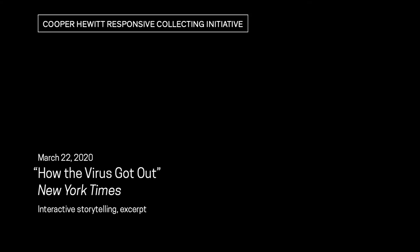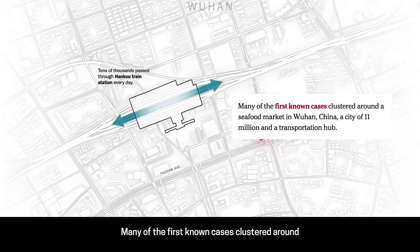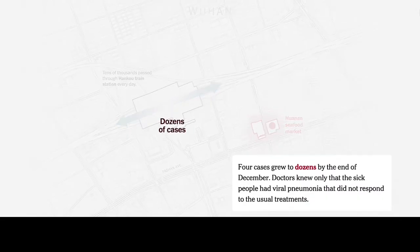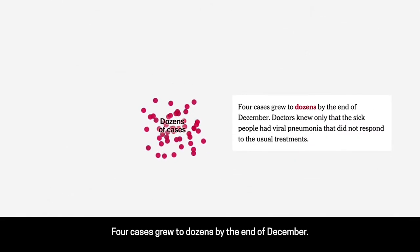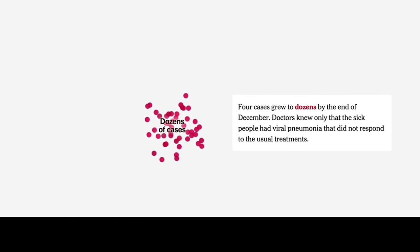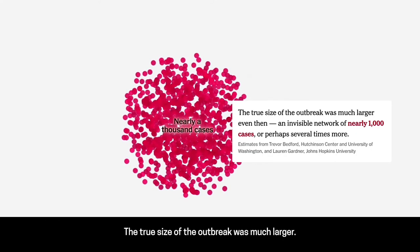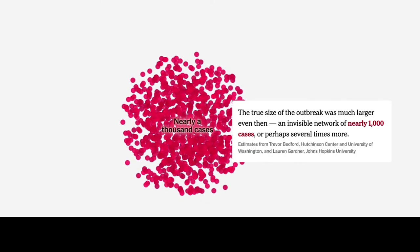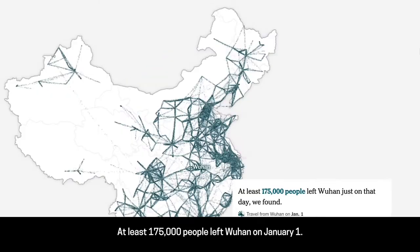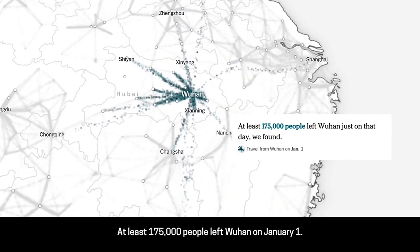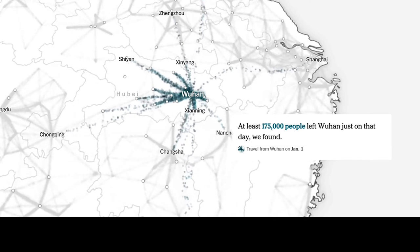This interactive story uses dots to illustrate how the virus got out. Many of the first known cases clustered around a seafood market in Wuhan, China in 2019. Four cases grew to dozens by the end of December. The true size of the outbreak was much larger — at least 175,000 people left Wuhan on January 1st.